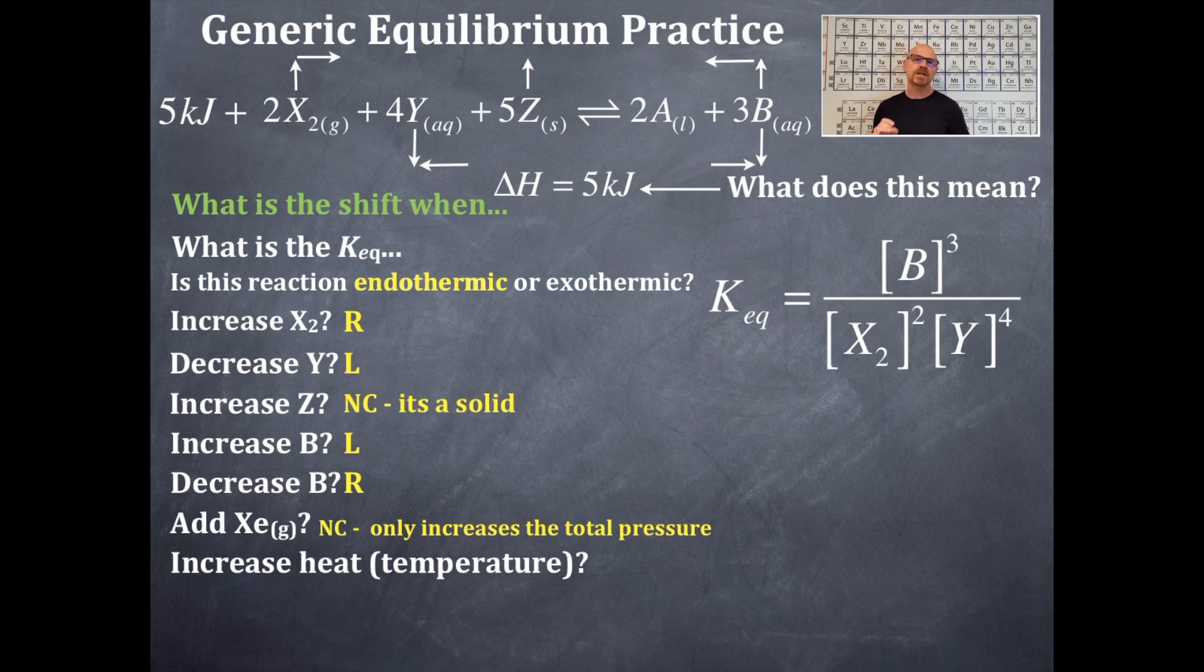Now the next one, we're going to increase the heat or increase the temperature. So the question is, where is our temperature term? That delta H told us where that temperature term was—the positive of that 5 kilojoules told us it was on the reactant side. So I'm going to increase that 5 kilojoules and I need to get rid of it. That is a shift to the right.